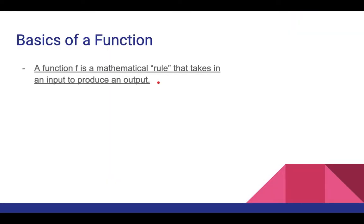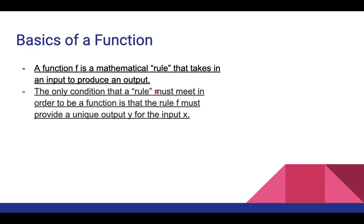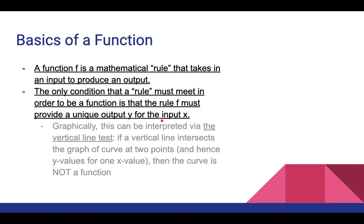So basics of a function. A function f is a mathematical rule that takes in an input to produce an output. The only condition that a function rule must meet in order to be a function is that the rule f must provide a unique, meaning only one, output y for an input x. Graphically, this can be interpreted via the vertical line test.